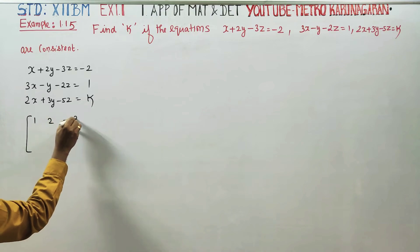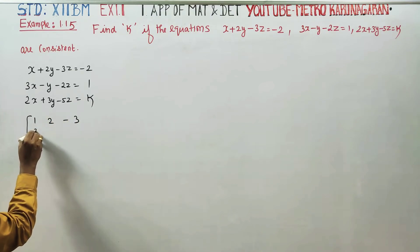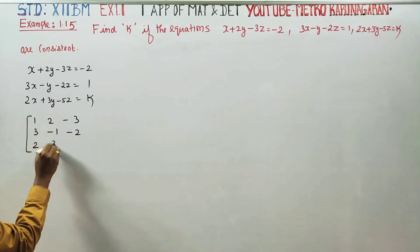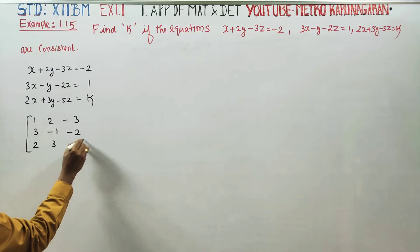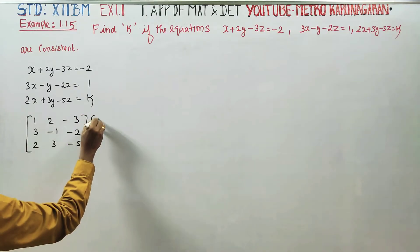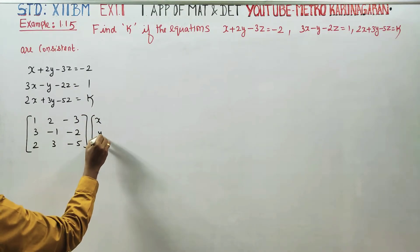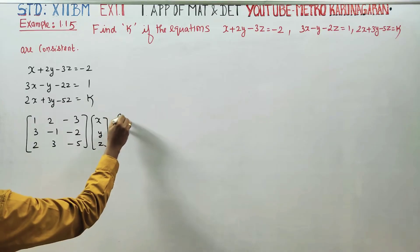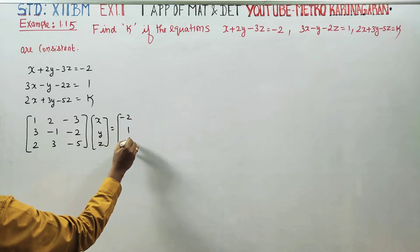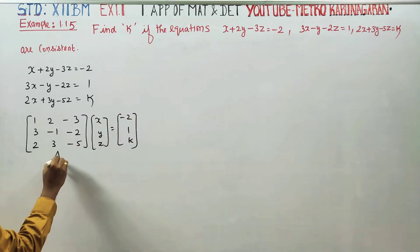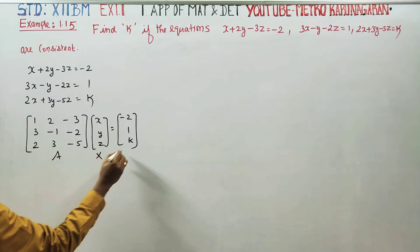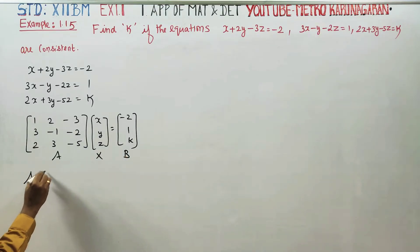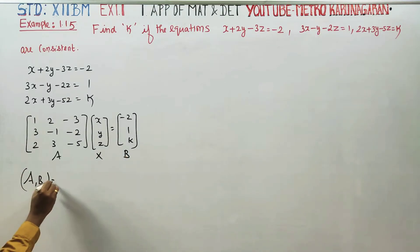We have equations 1, 2, 3. The coefficients form matrix A and the augmented matrix [A|B], with constant terms giving B as minus 2, 1, k.